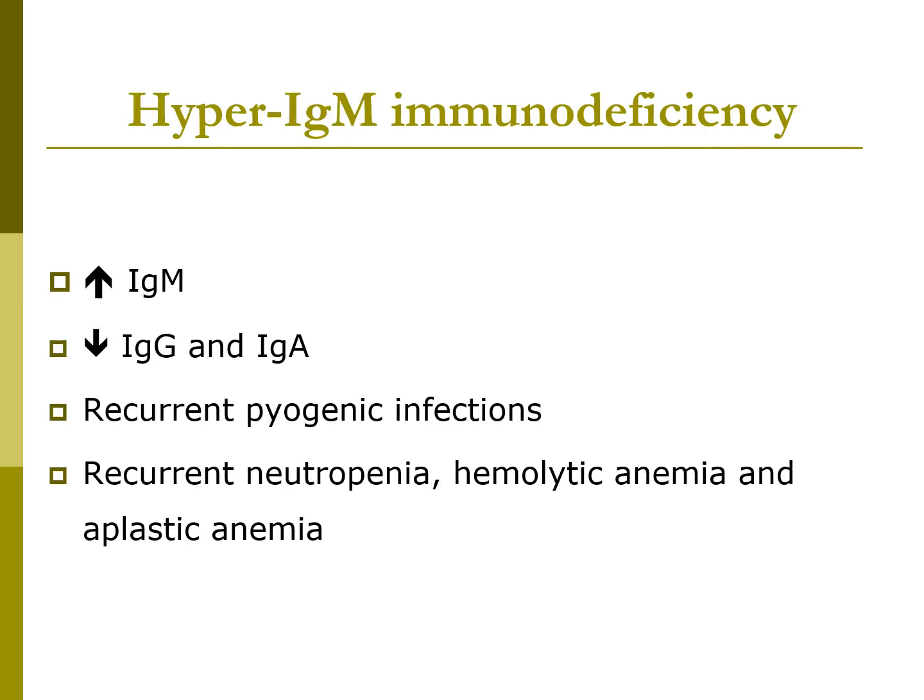Hyper-IgM immunodeficiency, which may sound like an oxymoron, is an X chromosome mutation disease occurring in the first and second year of life. Their IgM is increased — B cells produce almost exclusively IgM — while IgG and IgA immunoglobulin levels are extremely low to absent. Patients have recurrent pyogenic infections such as ear infections, sinusitis, and pneumonia, as well as recurrent neutropenia, hemolytic anemias, and aplastic anemia, which is a bone marrow disorder caused by low RBC production.